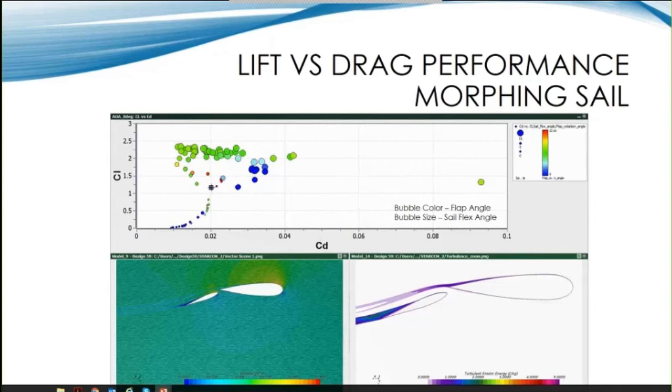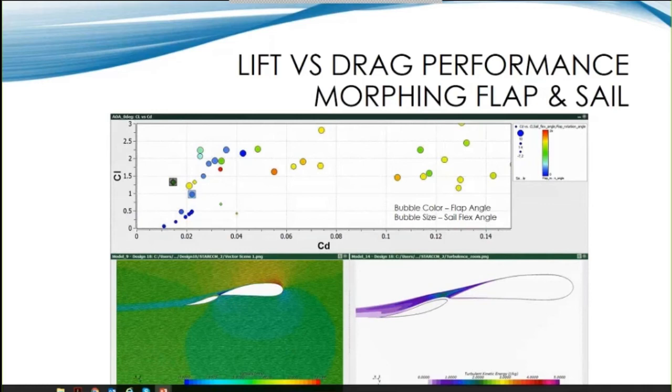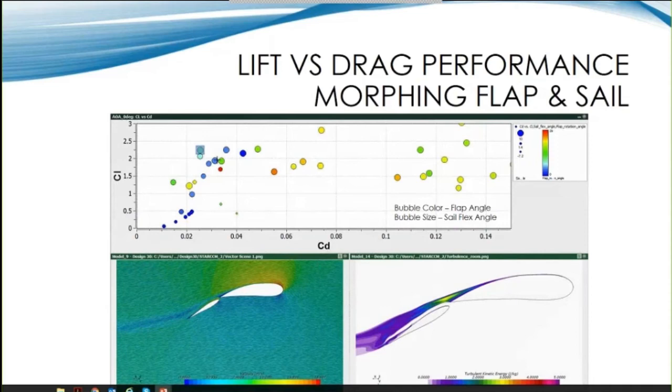It becomes more challenging to interpret the performance graph when we have both the mainsail and flap flexing. The reason is we are comparing many different airfoil and flap configurations on one chart. The color of the dots represent flap angle, and the size represents sail flex angle. Again, the highest lift designs have far lower flap angles. The amount of flex is still at or near the maximum.